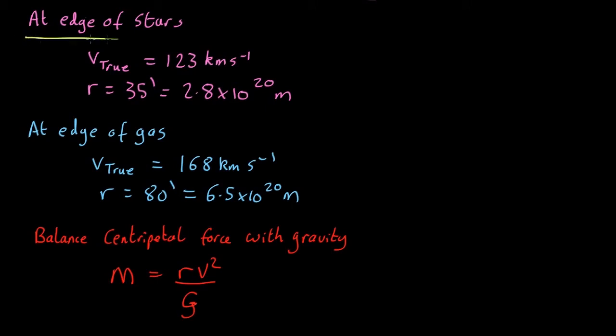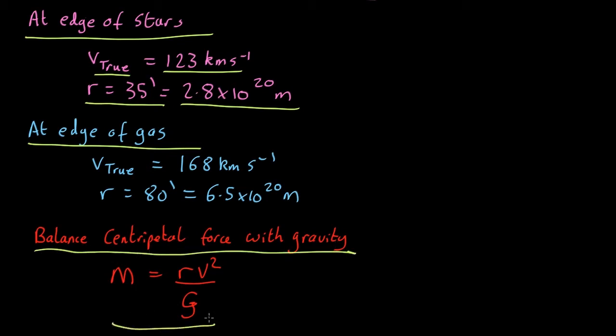So we know, at the edge of the stars, the true deprojected velocity, and we're able to convert the angle distance of that into a true physical distance. And we'd also know the same things at the edge of the gas. And finally, we know the equation for balancing the centripetal forces of gravity is this. So all we have to do is plug these numbers into this equation.